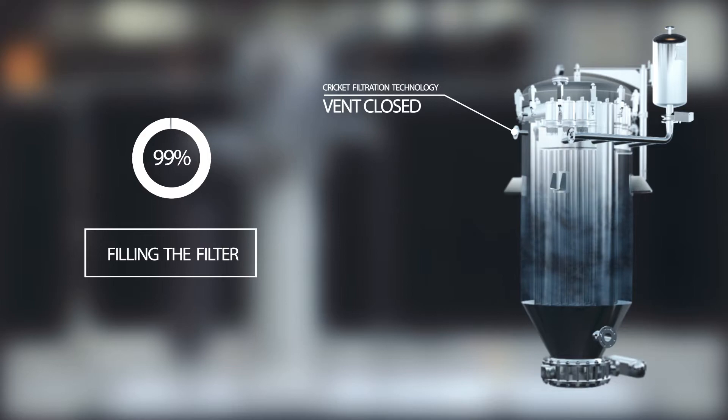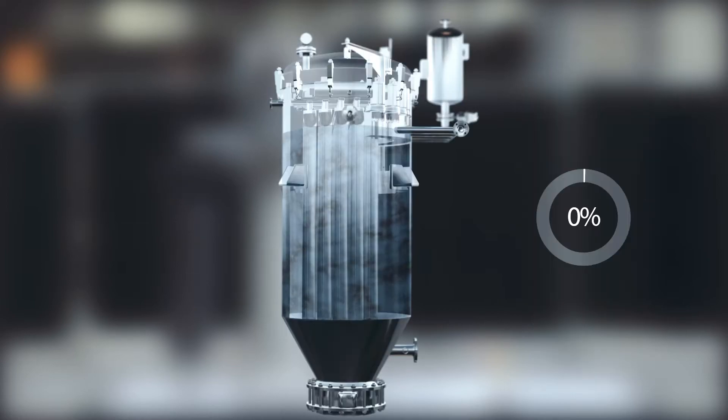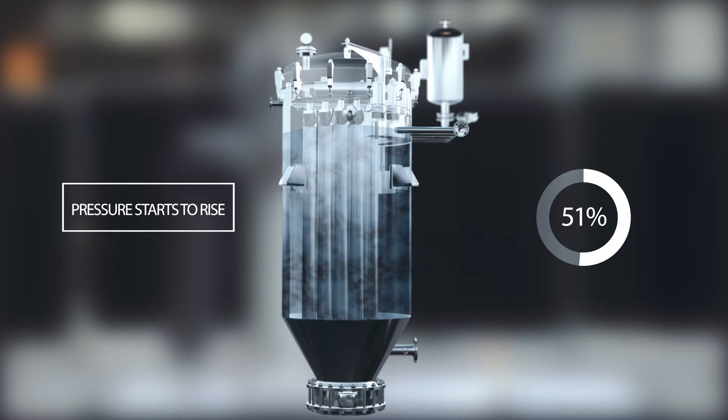The cricket filtration process is a batch process based on cake filtration and is fully automated. By using two or more filters, a continuous feed stream can be processed. Due to its specific cricket-like geometry, the surface-to-volume ratio of a cricket filter is very high.